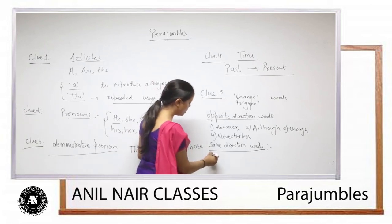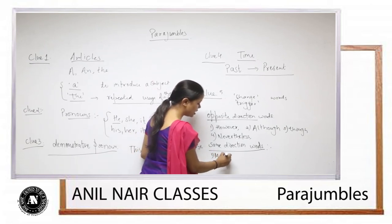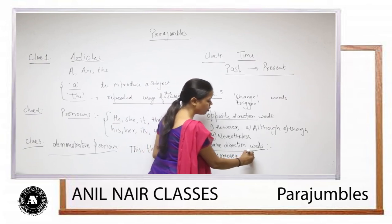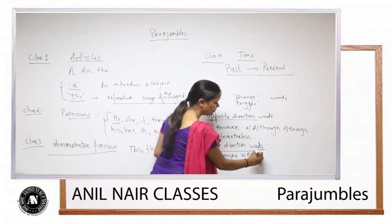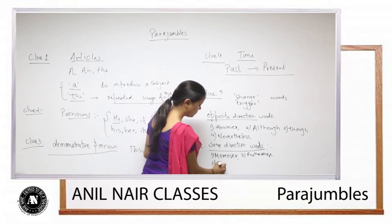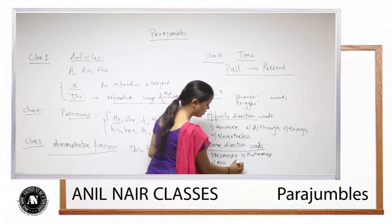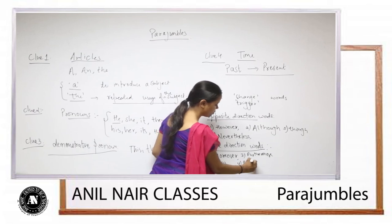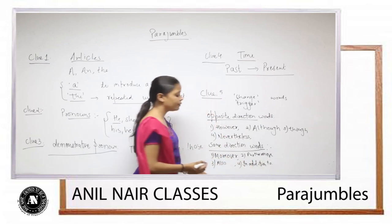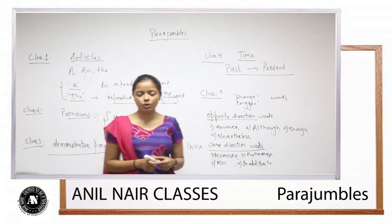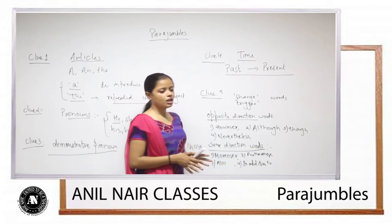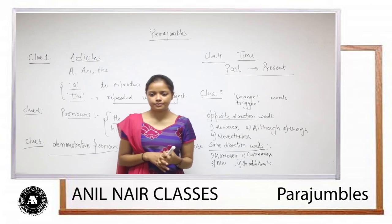So what are these same-directional words? There are many, we are just doing the main ones: 'Moreover', 'Furthermore', 'Also', 'In addition to', 'To add to it'. So these are some of the words we use to indicate same kind of information.